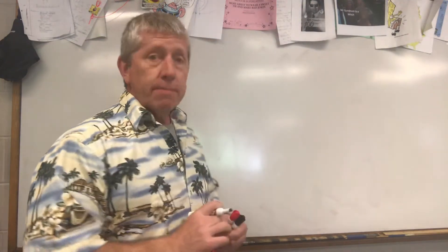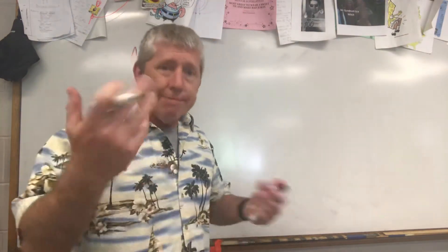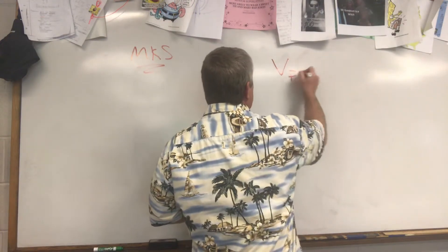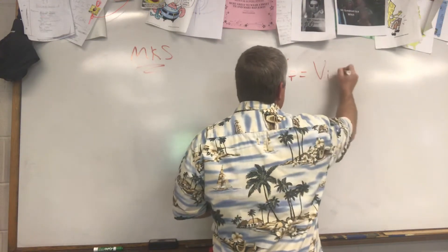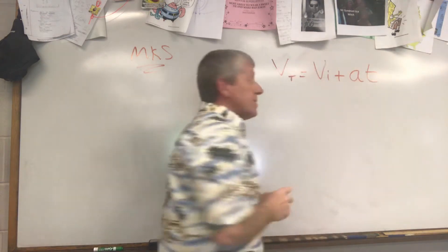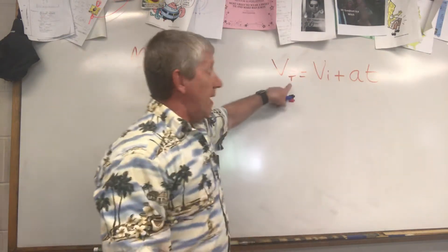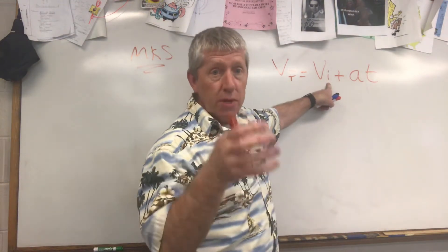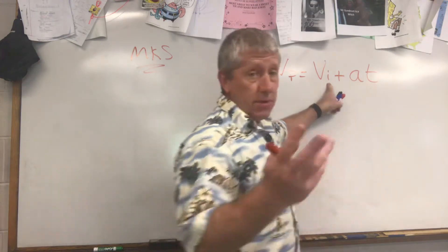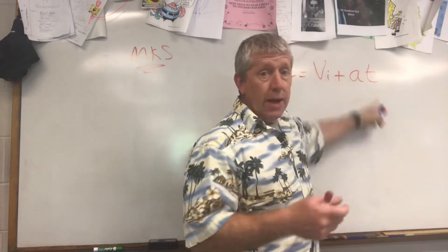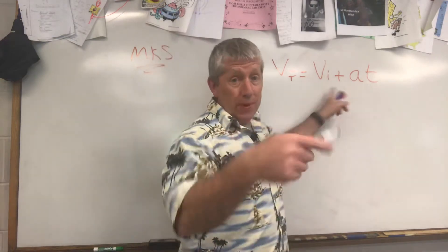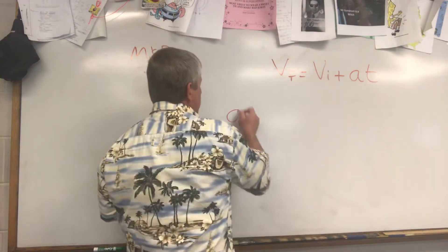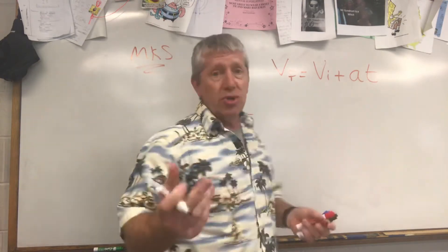The first of the Big Three is: final velocity equals initial velocity plus acceleration times time. The F is the final or ending velocity; the I is the initial velocity, sometimes it's zero when starting from rest. Acceleration times time. This is actually derived from the acceleration equation, which is change in velocity over time.